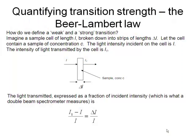So we need some way of quantitatively assessing the strength of a transition. What is the intensity of the electronic absorption? And we do that with something called the Beer-Lambert law.